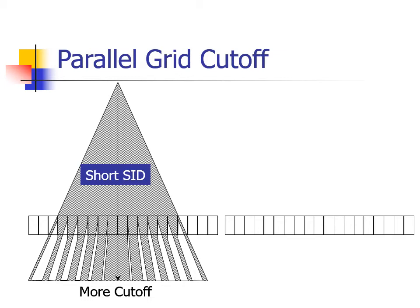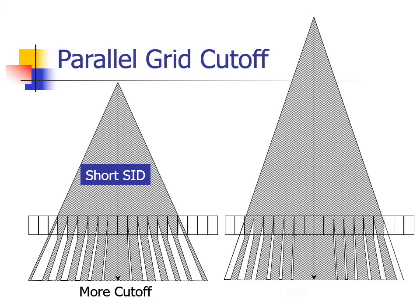Cutoff is more pronounced in high ratio grids. Notice that if one increases the source to image distance, cutoff becomes less severe. This is because at a longer distance, you use rays that are more from the center of the beam, and these rays diverge less. They are closer to perpendicular to the grid.